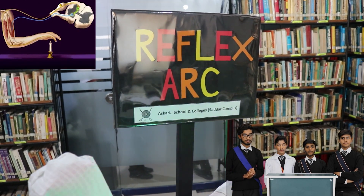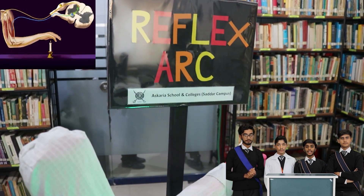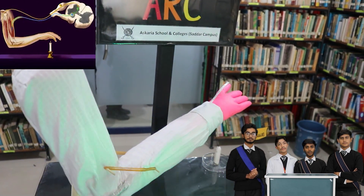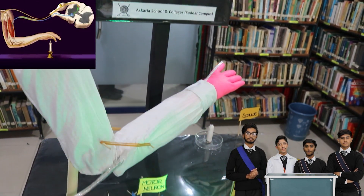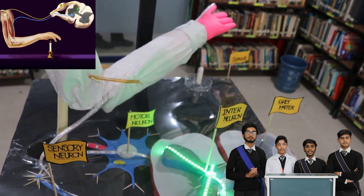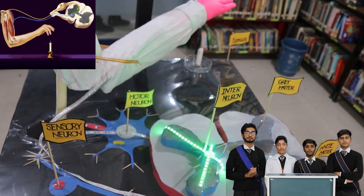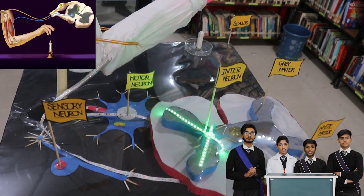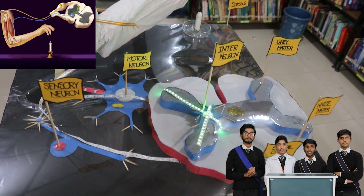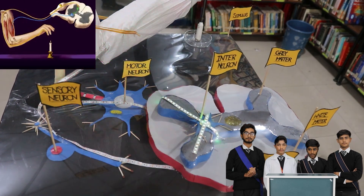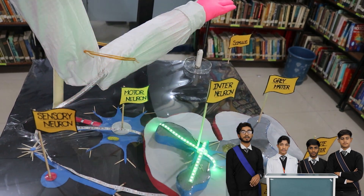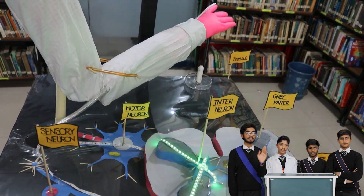So basically, reflex action is an immediate, automatic and involuntary response to a particular stimulation, while reflex arc is the pathway by which nerve impulse travels during a reflex action. I am here to discuss five components of reflex arc.